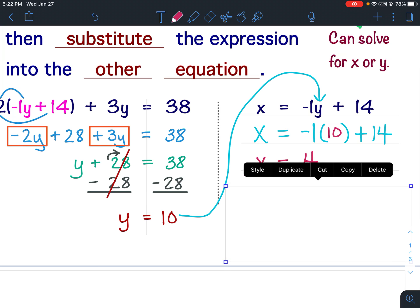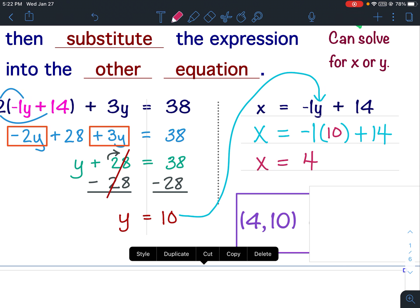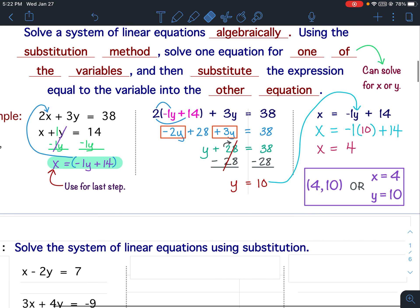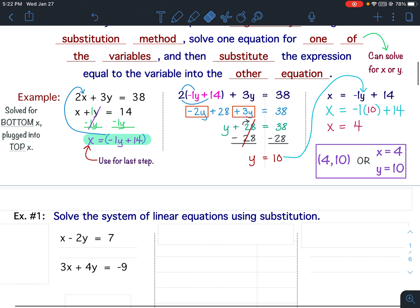Now, when we were doing graphing, this is how we wrote our final answers. We wrote it as the ordered pair 4, 10. But now that we're going to go into substitution, instead of writing our answers as an ordered pair, we're going to write it as just x equals 4 and y equals 10. So from now on, our answers are going to look more like this right here. Please write both down. Okay, so it looks like our answer is x equals 4 and y equals 10.